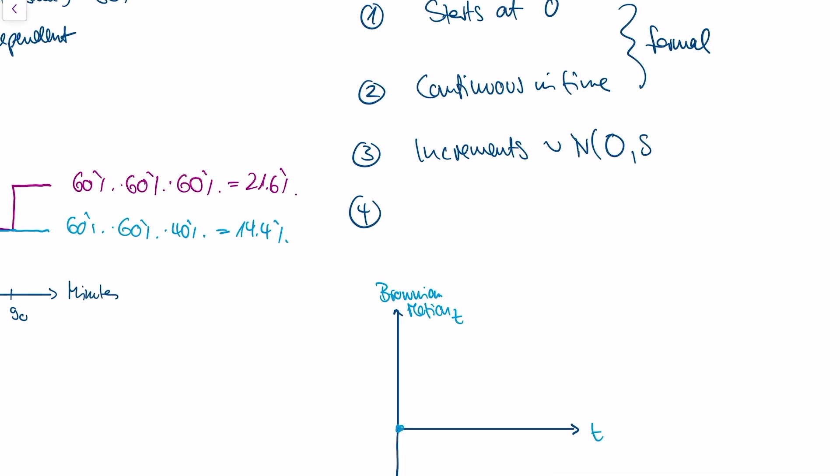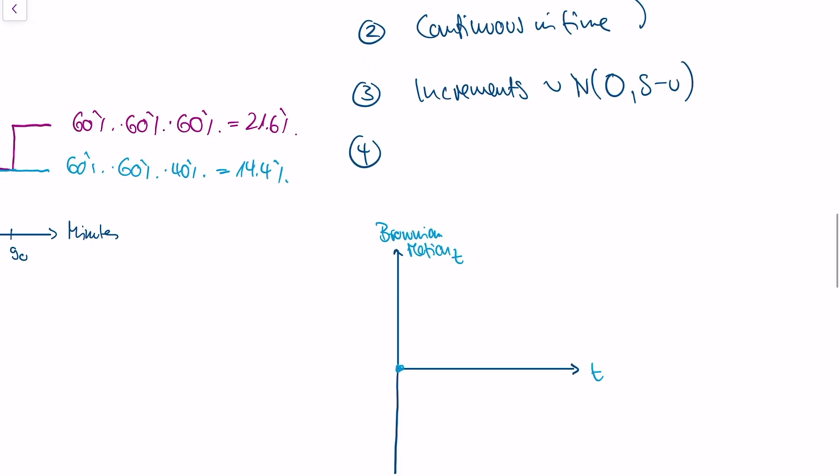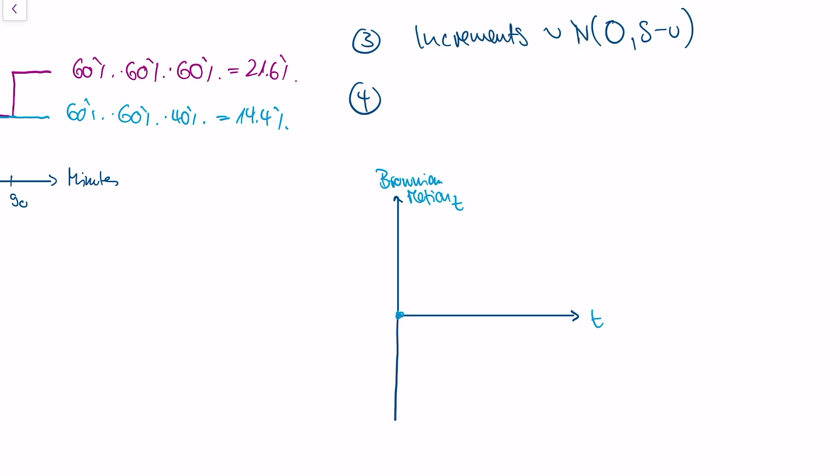They're distributed normally with mean zero, and variance is the distance of the increment. If our increment is between s and u, then the variance will be s minus u. So if this is my Brownian motion, and here's u, and here's s, then the realizations here are normally distributed with mean zero and variance s minus u. At time u, I am at this point. On average, I will be at the same point at time s. The probability that I'm upwards or downwards of this point are exactly equal—exactly 50%.